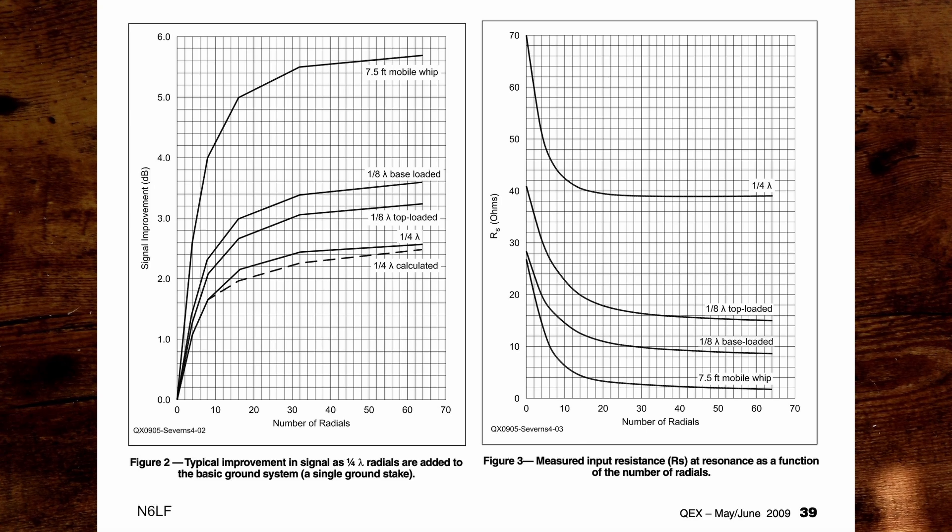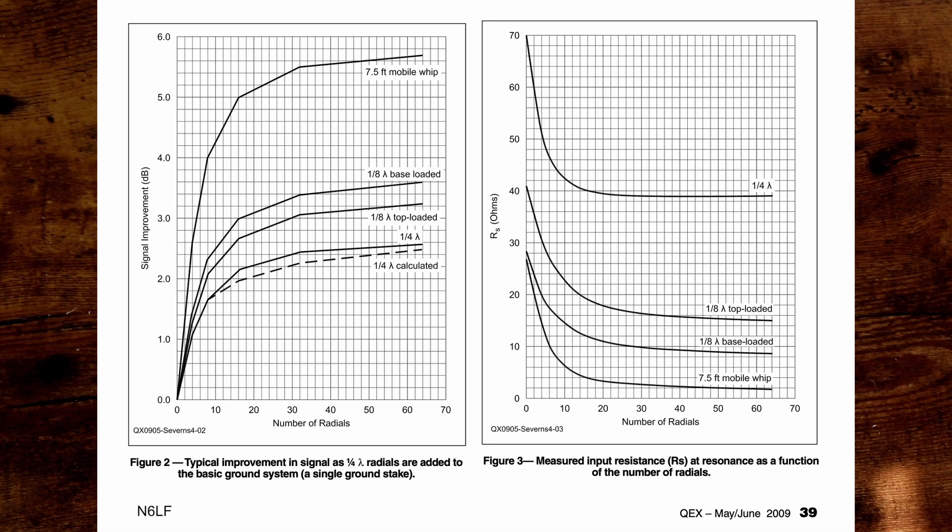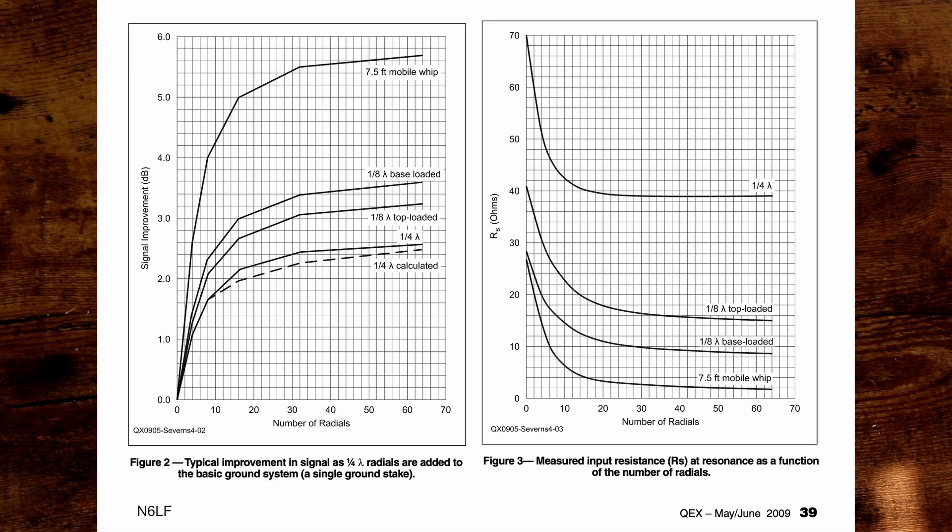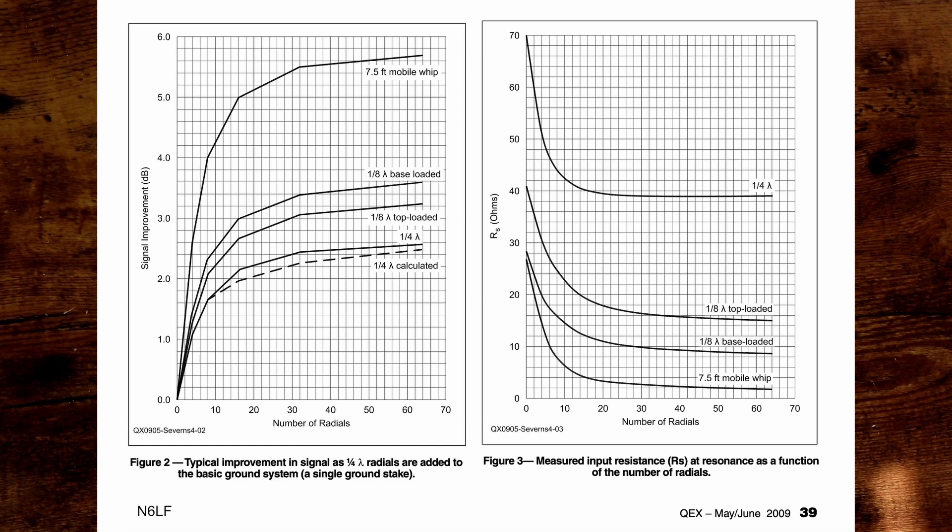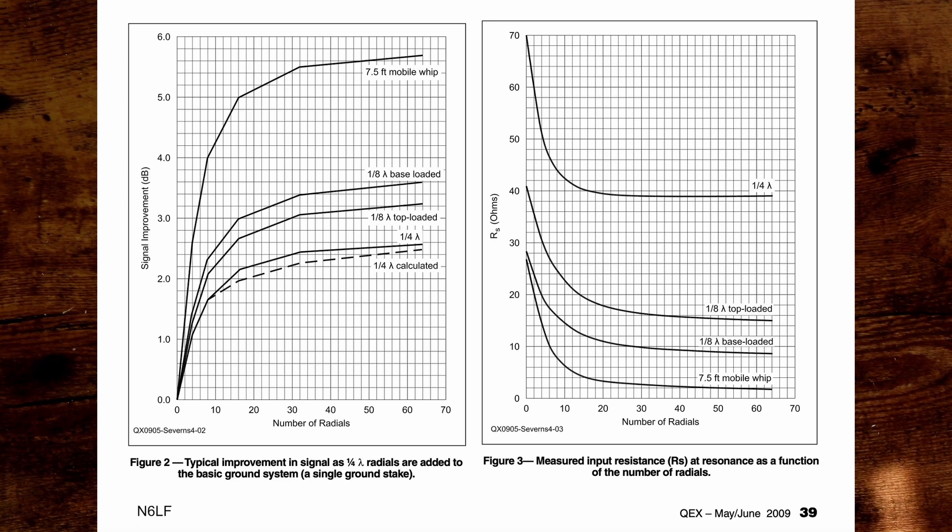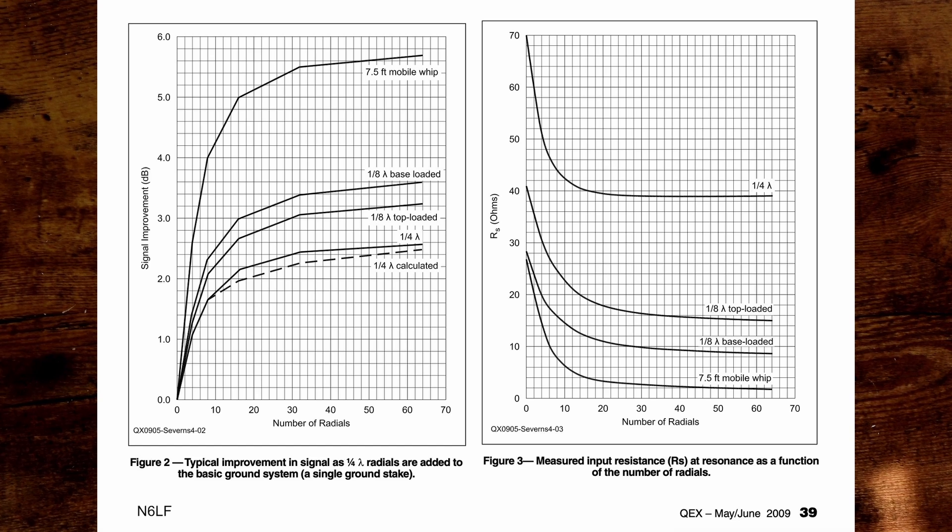If we're looking at the plot here on the left, this is signal improvement. You can see at 10 radials, we're probably 1.8 or so dB improvement. At 20 radials, then you're a little more than 2, and the return is not very high the more radials you add. If you look at the right plot here, we're looking at the top one, the quarter wave lambda. So at 10, you're 42 ohms, and then when you get to 20, you're 39 ohms, something like that.